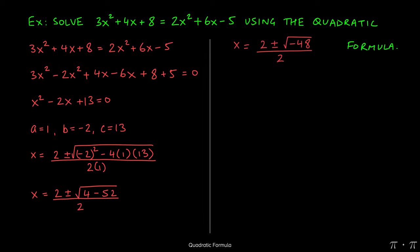Now we can simplify what's inside the radical. 4 minus 52 will give us a negative 48 inside the radical. But remember, we cannot take even roots of negative numbers, so this is where complex numbers should start popping in your head.